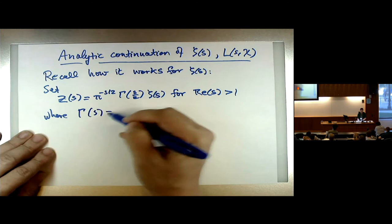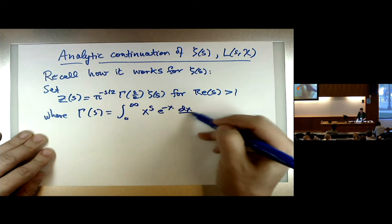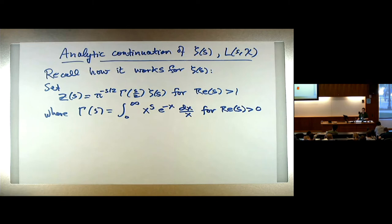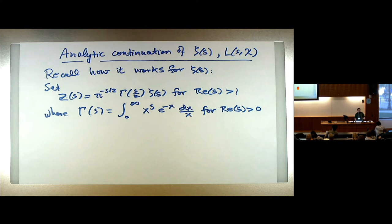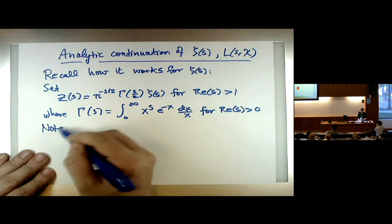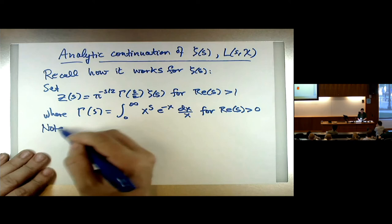So how are we going to get the analytic continuation? Let me remind you the situation for the zeta function. What we're going to do is multiply by π^(−s/2) · Γ(s/2) · ζ(s). We're starting to the right of 1 where everything already makes sense. The gamma function is an integral transform. The zeta function itself only makes sense initially to the right of 1, so that's where we have to work.